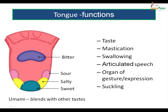The taste of umami is generally felt all over the central parts of the tongue. So the basic taste sensations include sweet, salty, sour, bitter, and umami, which is felt all over the central parts. In addition to taste, the tongue helps in mastication and swallowing of food, is essential for articulated speech, is an organ of gesture and expression, and is an organ for suckling by infants.